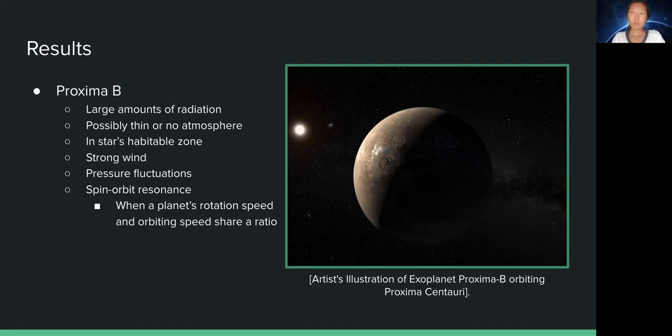Oceans would be able to protect living organisms from the heavy radiation that Proxima b faces. However, there is also extremely strong wind, as well as large pressure variations that would affect life. The exoplanet also most likely has a spin orbit resonance with its star, but it's not known what the ratio is.